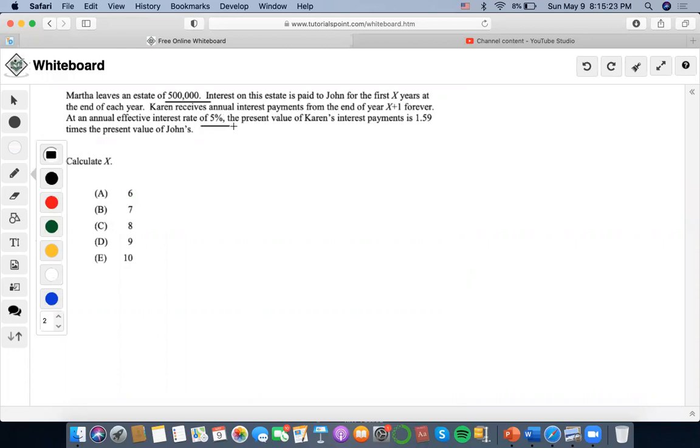Okay, at an effective 5% and Karen's interest payments are 1.59 times the present value of John's. So since Martha leaves an estate of $500,000, we want to view this as some sort of lump sum or loan, and interest on this estate is paid out to John for the first X years.